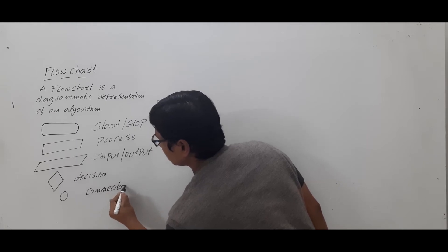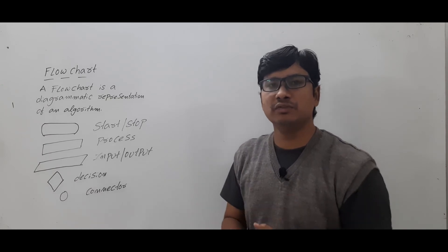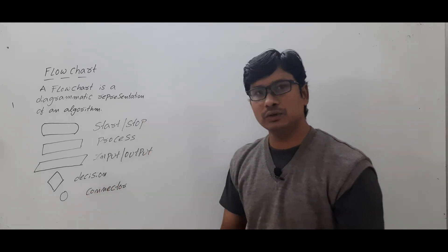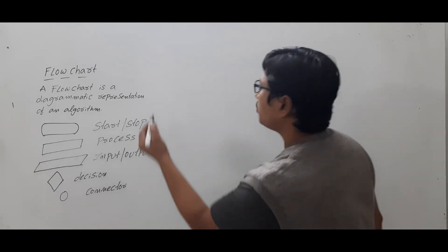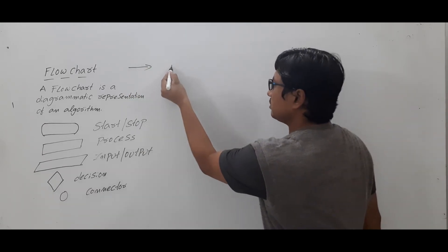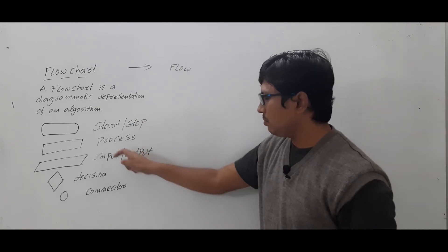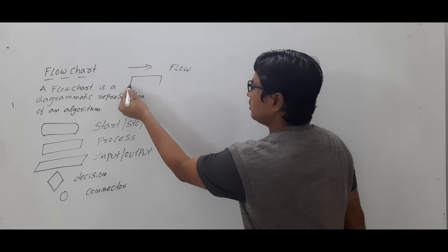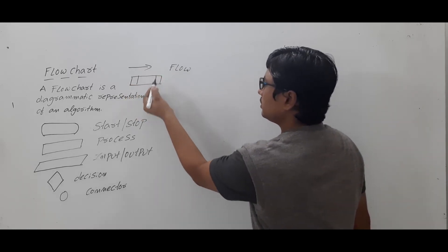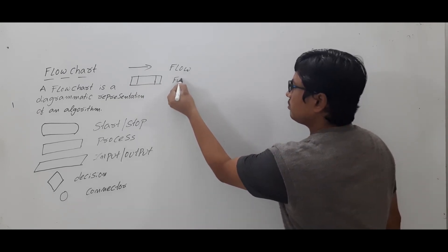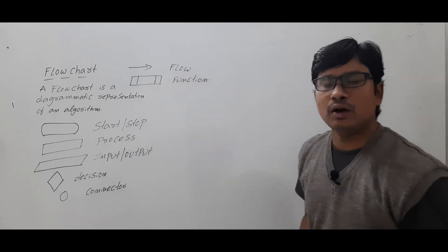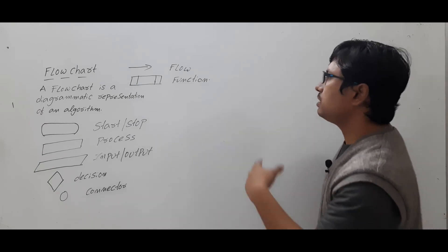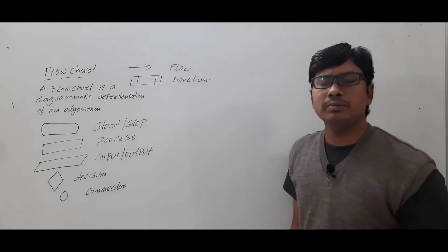You also have connectors, which are represented using a circle. If a flowchart becomes very lengthy and cannot fit on a single page, connectors are used to connect the two pages. Arrows represent the flow of the process. Finally, predefined processes or functions are represented using a special rectangle symbol with double vertical lines on the sides. Functions and user-defined functions in C programming will be discussed in coming classes.